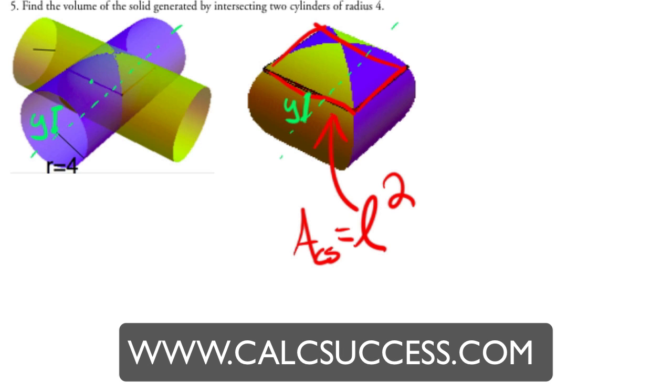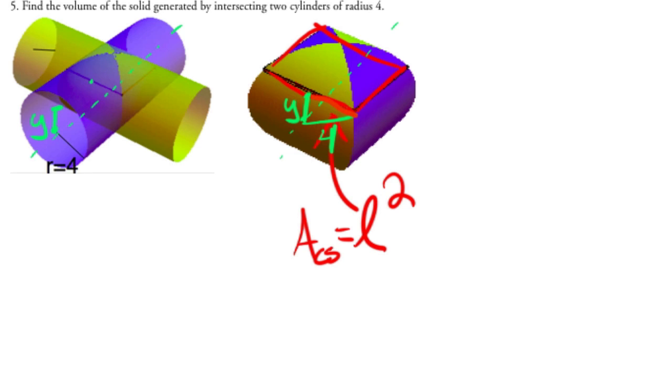And so then I also know that from here to here, that's just the radius, that's just 4. And so then I can find half of the length. Let me label that something, let's call that A.